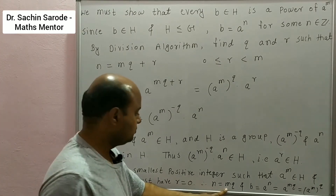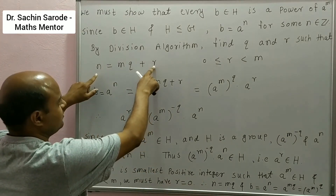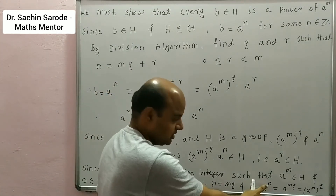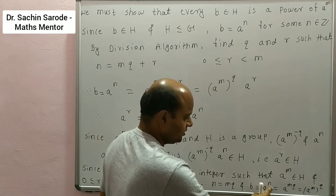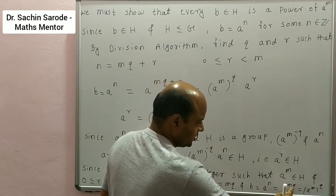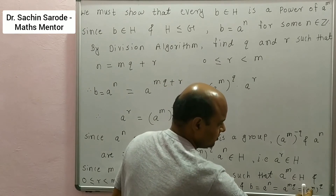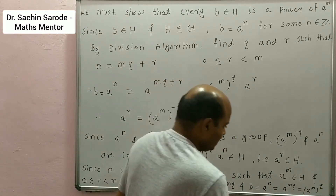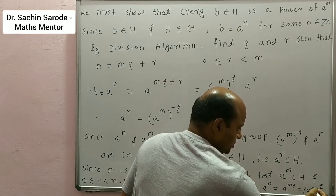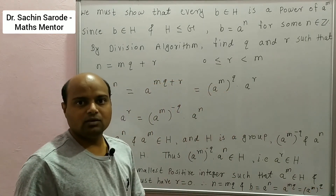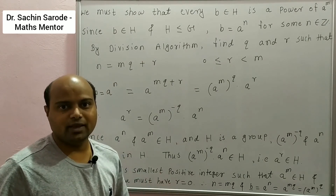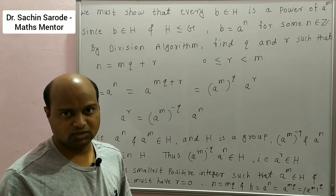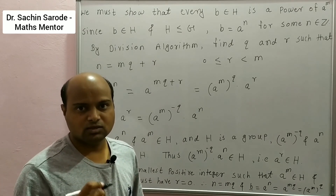When R = 0, we get N = MQ. So putting R = 0 we get N = MQ. Therefore B = A^N = A^(MQ). And A^(MQ) can be written as (A^M)^Q. That is, B can be written as a power of A^M. Therefore every element of H can be written as a power of A^M. Therefore A^M generates H, and hence H is a cyclic group.